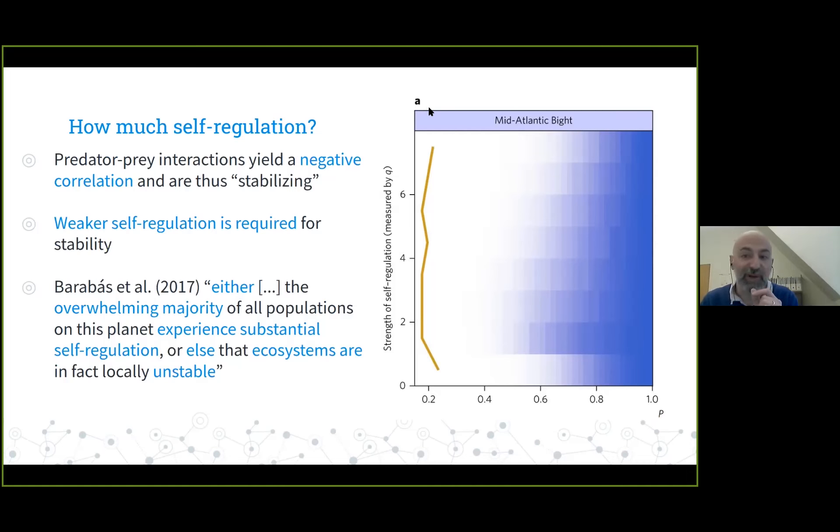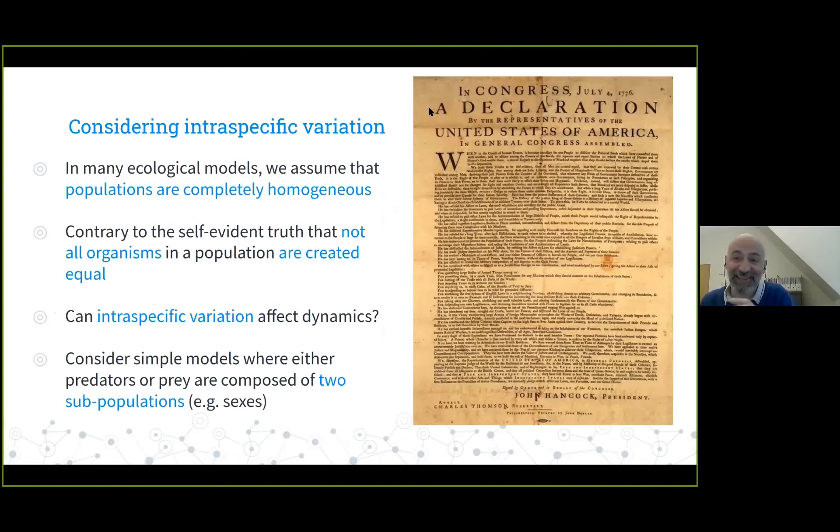This gets to what I'm working on right now. One essential simplification we're making when we write the Lotka-Volterra equation is to say that all the predators are identical, all the prey are identical, which we know is not true. But we assume these populations are completely homogeneous. Contrary to what it says in the Declaration of Independence, there is a self-evident truth that not all organisms in a population are created equal. We have intraspecific variation. What I'm asking today is: can this intraspecific variation affect dynamics? And if so, how?